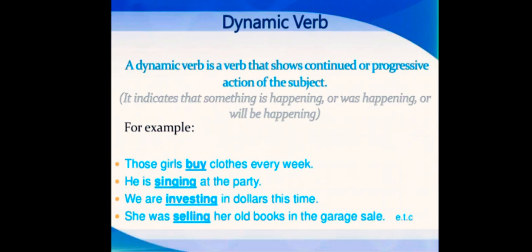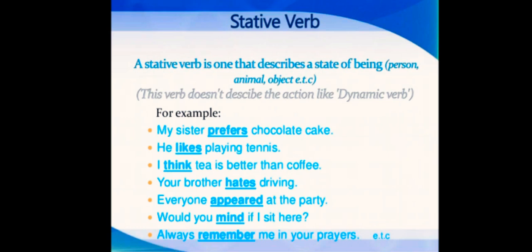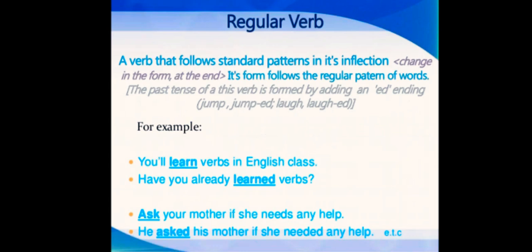A stative verb is one that describes a state of being - person, animal, object, etc. The verb does not describe the action like dynamic verb; it shows the mental state, the emotions, the thought process, etc. My sister prefers chocolate cake. He likes playing tennis. I think tea is better than coffee. Your brother hates driving. Everyone appeared at the party. Would you mind if I sit here? Always remember me in your prayers. These are the state of being, known as stative verbs. Here action is not taking place in its physical form or continued form; it's more the condition, the state of mind, or the feeling or the thought process.